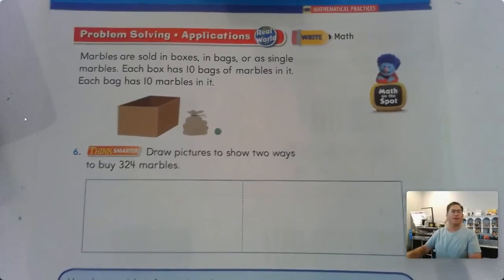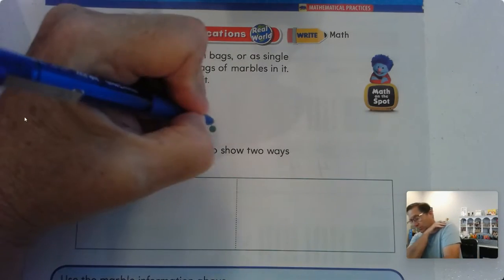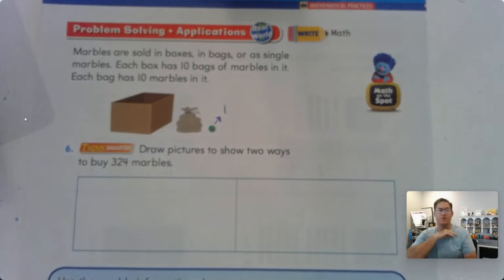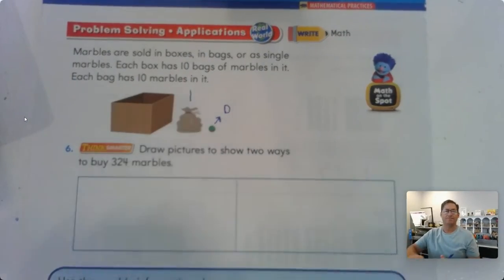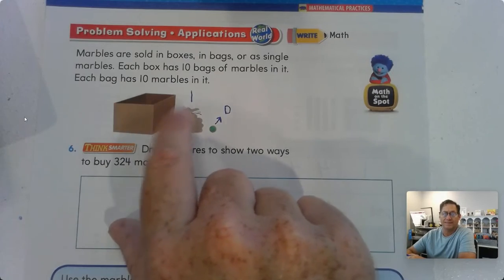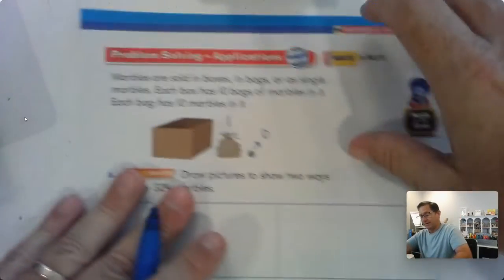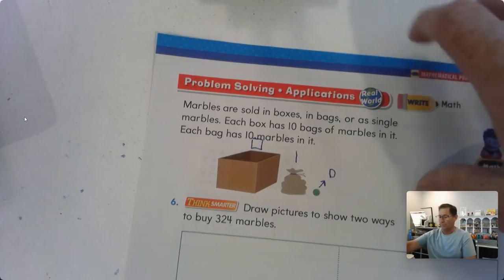Page 88. Marbles are sold in boxes, in bags, or as single marbles. Each box has ten bags of marbles in it. Each bag has ten marbles in it. So that has a value of one. That's like our circles. This is equal to a ten rod. And ten tens - there's ten bags in a box. Well, that's ten of these. Ten tens is 100. So we can represent the box as a square.